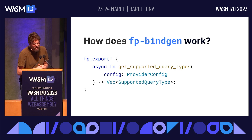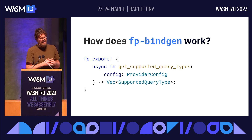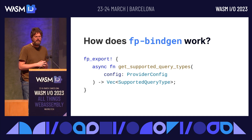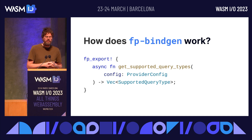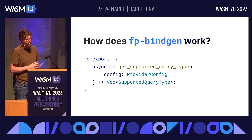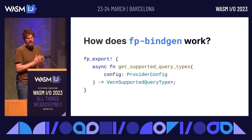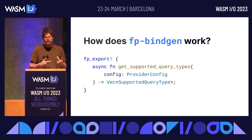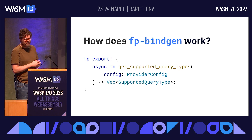How does it generate those bindings? It needs some sort of source of truth, and this is immediately where FP bindgen diverges from most other tools with bindgen-like functionality. Most of those tools allow you to write a protocol definition using an IDL or interface description language, but with FP bindgen it works slightly differently — we just use simple Rust macros. Here you see an example of a Rust export macro, which tells FP bindgen this is a function exported by the plugin and can be called by the runtimes. Similarly, there's an inverse import macro that defines which functions can be imported by the plugin from the runtimes.